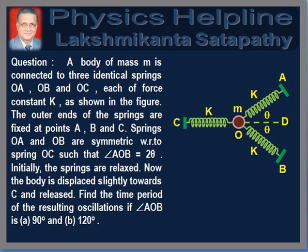The outer ends of the springs are fixed at points A, B, and C. The springs OA and OB are symmetric with respect to spring OC such that angle AOB is equal to two theta. Initially, the springs are relaxed. Now the body is displaced slightly towards C and released. Find the time period of the resulting oscillations if angle AOB is 90 degrees and 120 degrees.